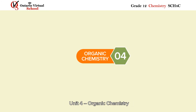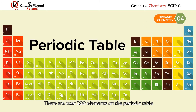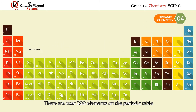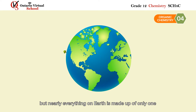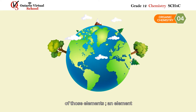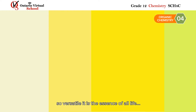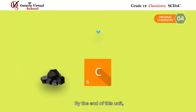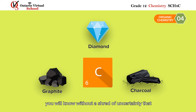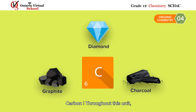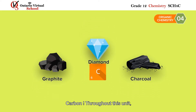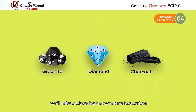Unit four: organic chemistry. There are over 200 elements on the periodic table, but nearly everything on earth is made up of only one of those elements — an element so versatile it is the essence of all life. By the end of this unit you will know without a shred of uncertainty that the wonder element we're referring to is carbon. Throughout this unit we'll take a close look at what makes carbon so remarkable in its ability to bond and react.